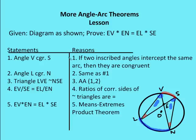We start by saying that angle V and angle S are congruent because they intercept the same arc, LN. Then angle L and angle N are congruent for the same reason — they intercept the same arc, VS. So triangle LVE is similar to triangle NSE by AA similarity. Then I set up my ratios: EV over SE equals EL over EN, which gives us EV/SE = EL/EN.